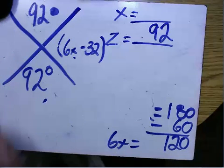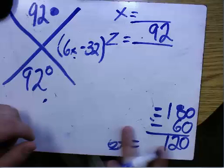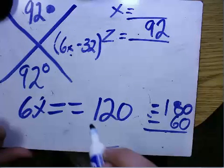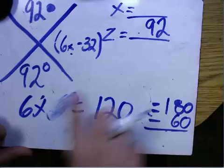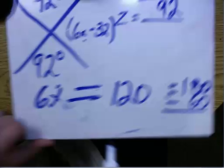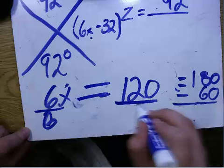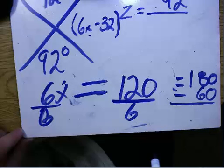Then you divide each side by 6, and you get 20. So x equals 20.